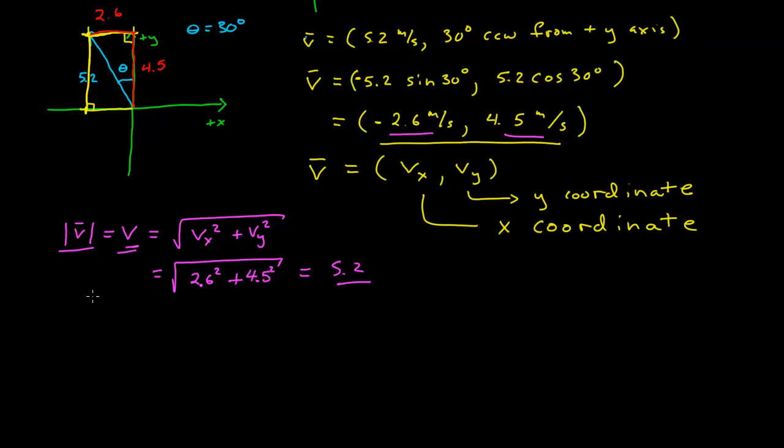So theta is equal to the tangent, tangent theta is equal to 2.6 over 4.5. So theta is equal to arc tangent of 2.6 over 4.5, and that we would recover then our 30 degrees.